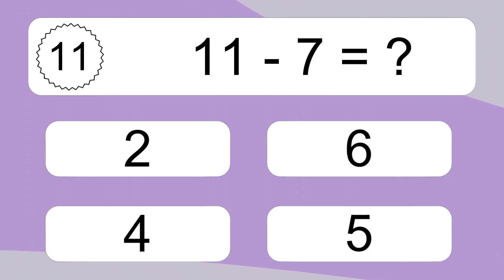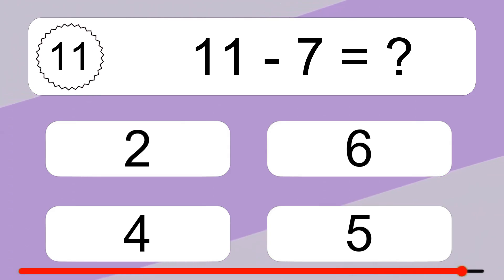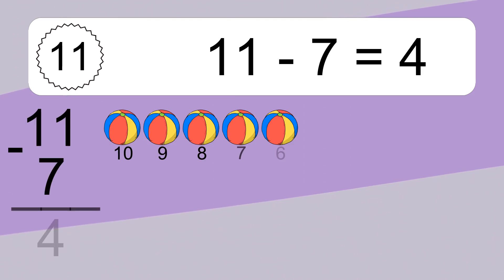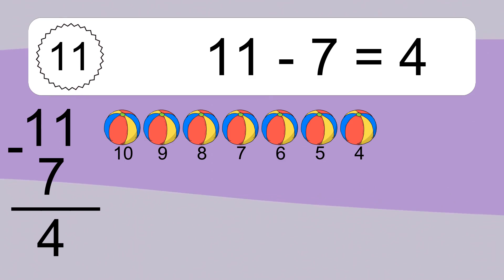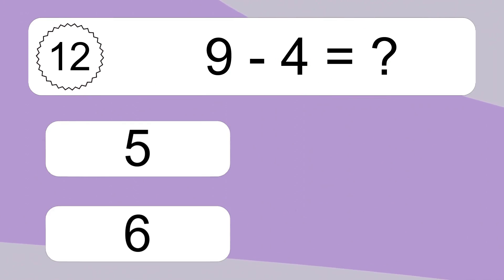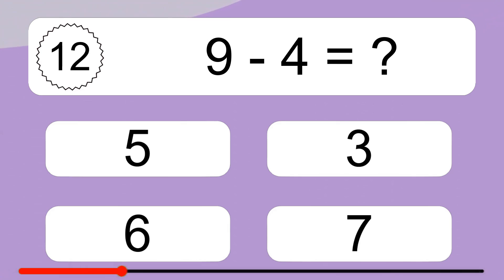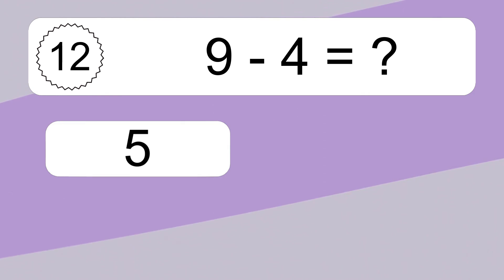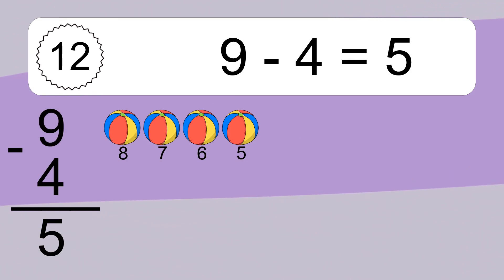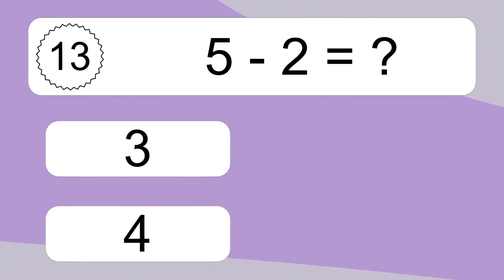Eleven minus seven equals what? Eleven minus seven equals four. Let's count it: ten, nine, eight, seven, six, five, four. Nine minus four equals what? Nine minus four equals five. Let's count it: eight, seven, six, five.